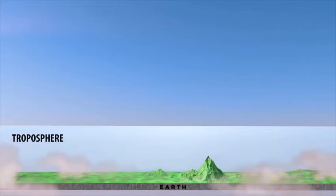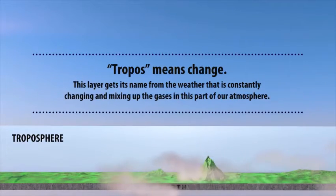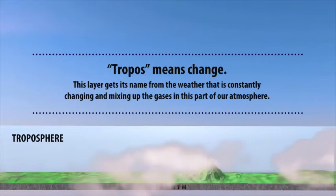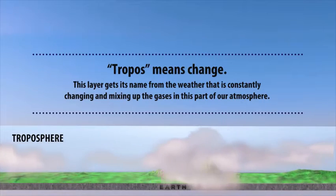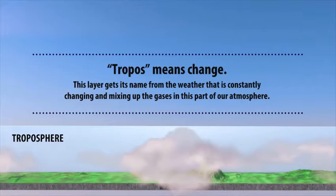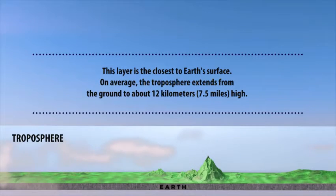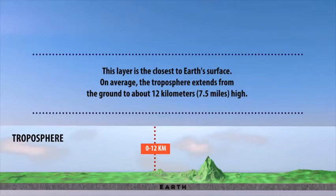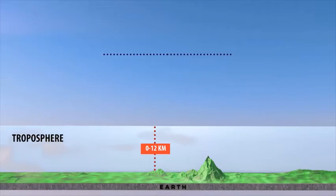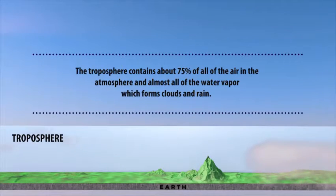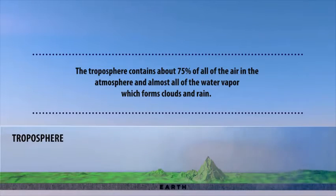Let's discuss first the troposphere. Tropos means change. This layer gets its name from the weather that is constantly changing and mixing up the gases in this part of our atmosphere. This layer is the closest to the Earth's surface. On average, the troposphere extends from the ground to about 12 kilometers (7.5 miles) high. The troposphere contains about 75% of all the air in the atmosphere and almost all of the water vapor which forms clouds and rain.